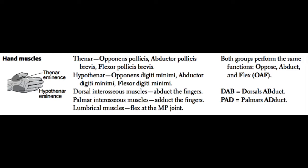Lastly, we have the lumbrical muscles. These flex the fingers at the MCP joint and extend the fingers at the interphalangeal joints. In terms of innervation, both the dorsal and palmar interosseous muscles are supplied by the ulnar nerve. The third and fourth lumbrical muscles — the medial two, corresponding to your pinky and ring fingers — are controlled by the ulnar nerve. The first and second lumbrical muscles, the lateral ones for your index and middle fingers, are controlled by the median nerve.